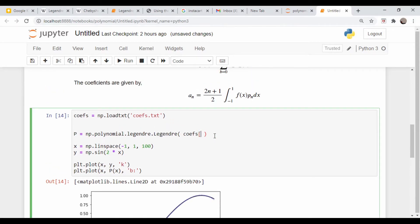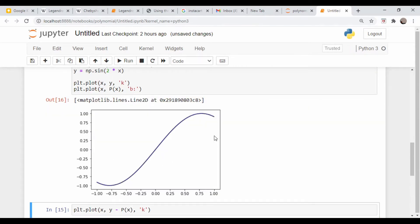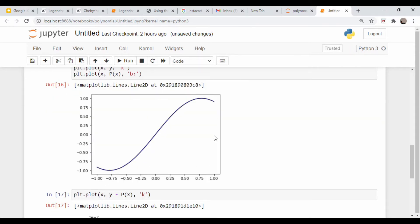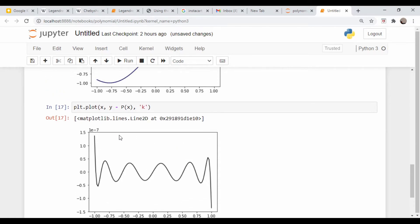Let's just plot all of them here. Let's get rid of that. And now our errors are really small, on the order of 10 to the minus 7.